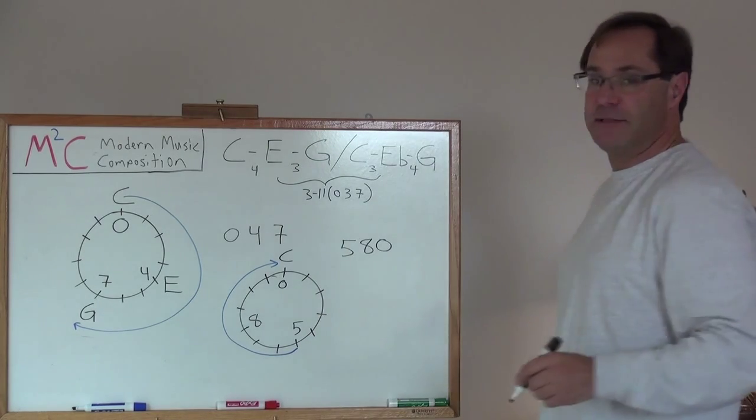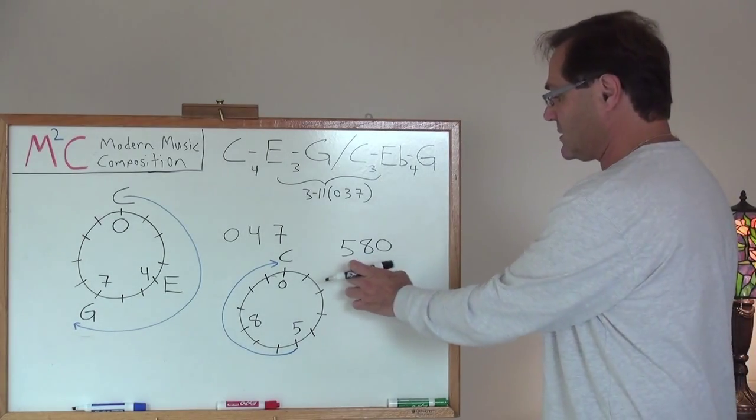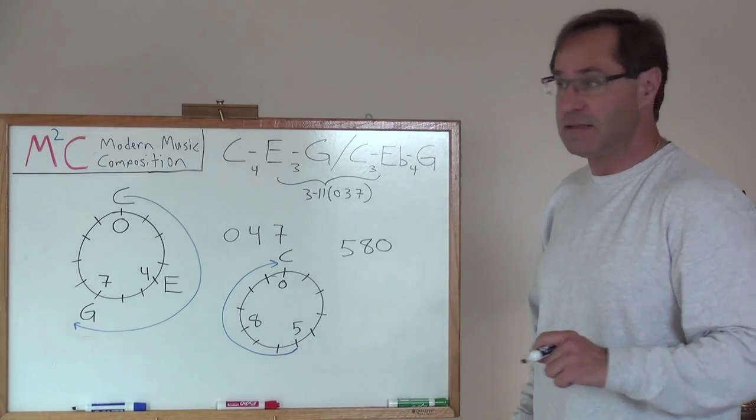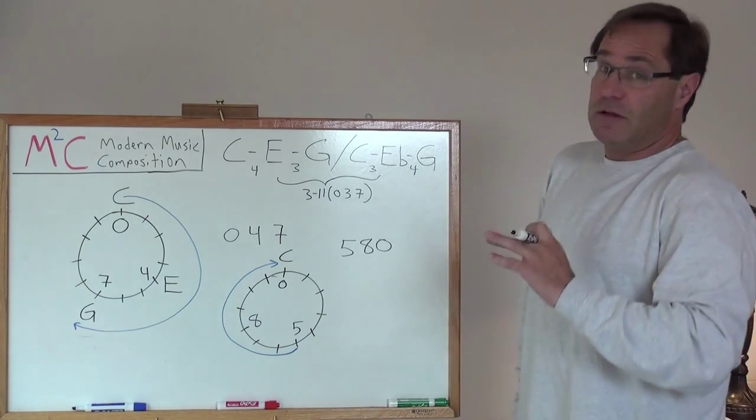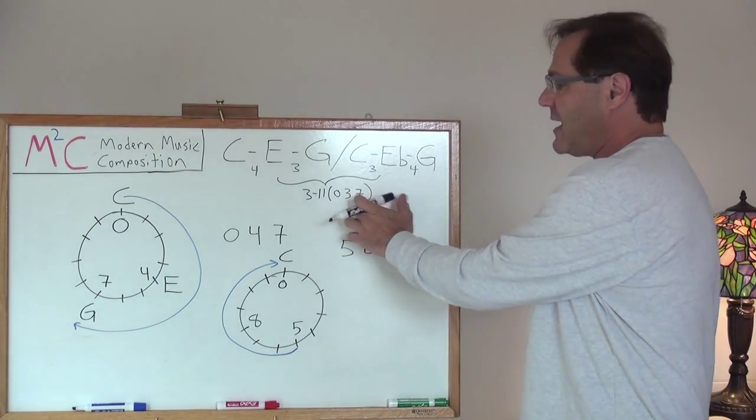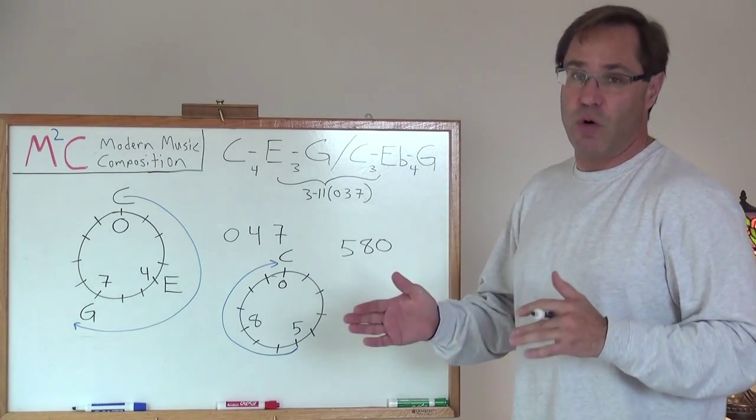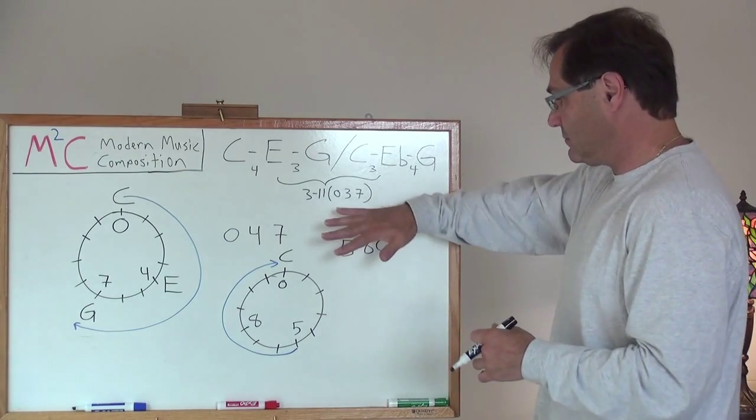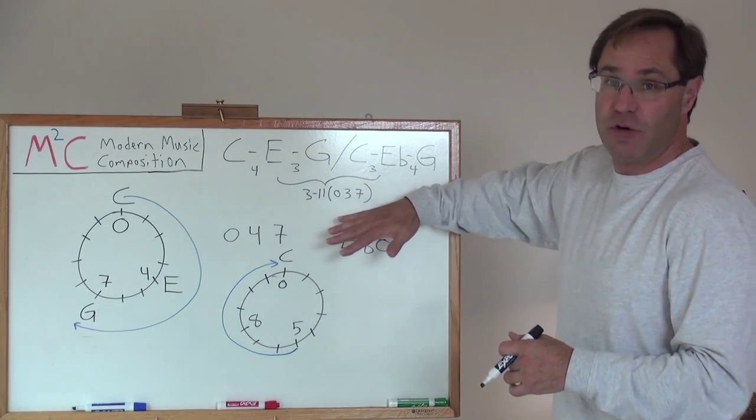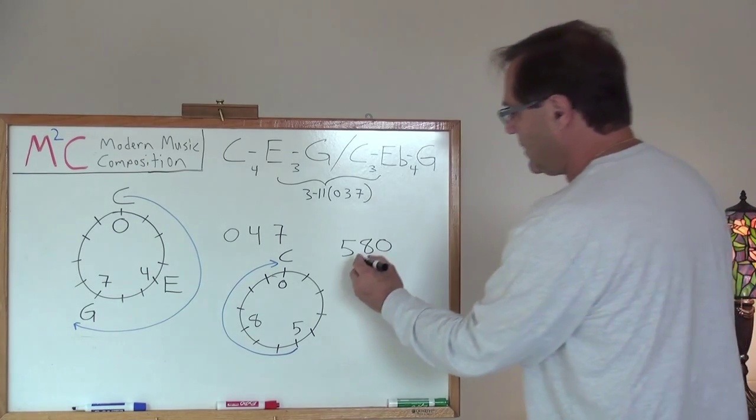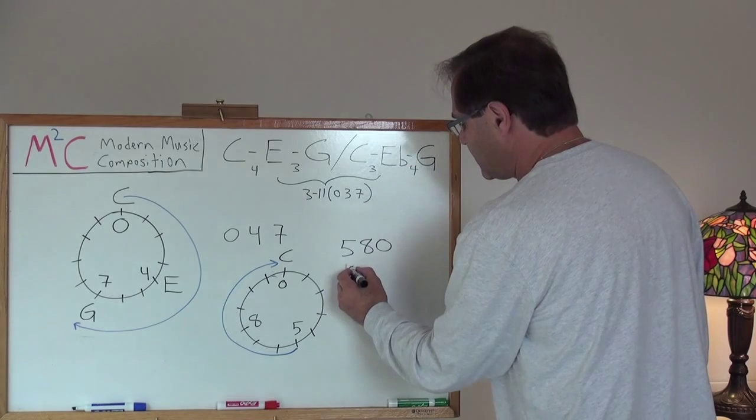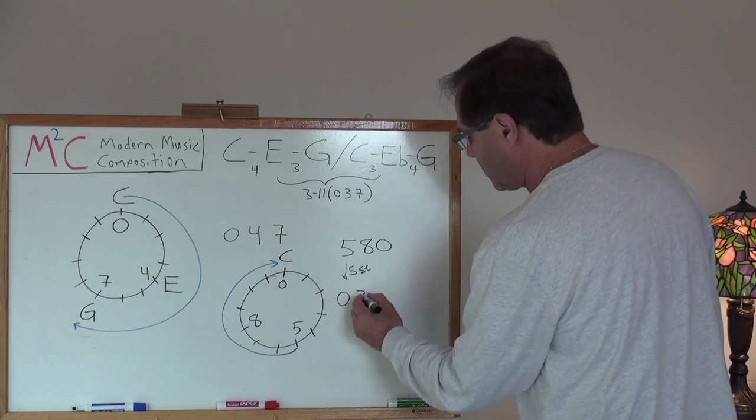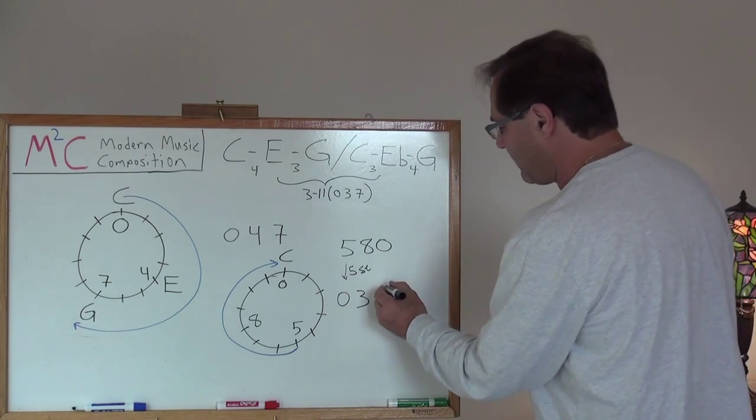Well, I always like to transpose down to 0, so I always like to deal with the smallest numbers possible. Because that's what you want to do in creating your abstract set class. I'm going to go down 5 semitones to get me to 0 here. So I go 0, 8 minus 5 is 3. And 0 is 12. 12 minus 5 is 7.